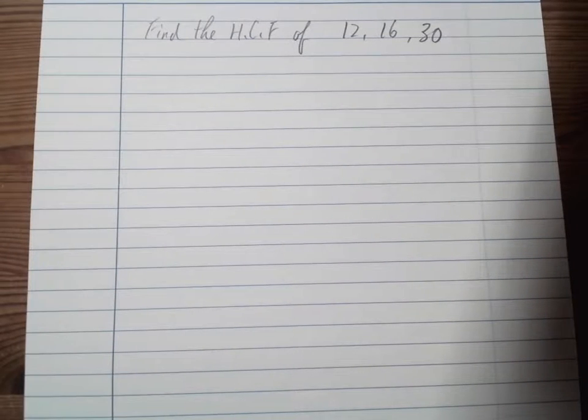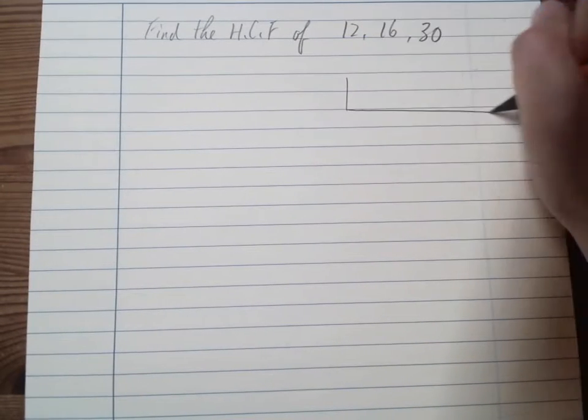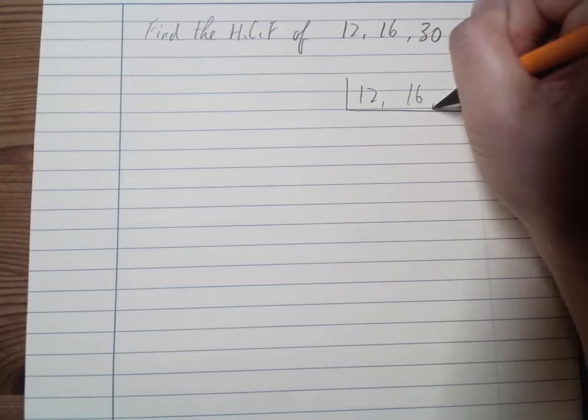Alright, I'm not doing the listing now because it's a bit boring, so it's long actually. So I'm going to do this division method now. So what I'm going to do is I have 12, 16, 30.